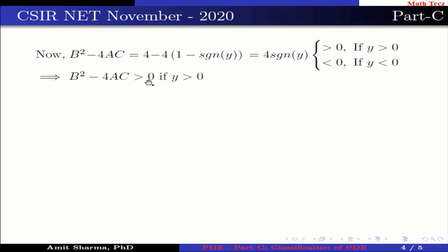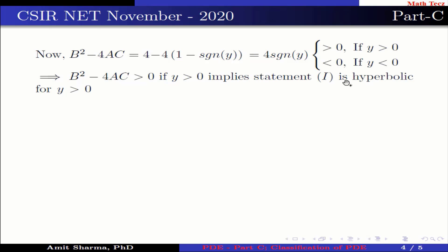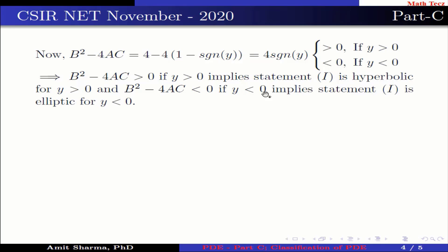This implies B² − 4AC > 0 when y > 0, so statement one is hyperbolic for y > 0, and elliptic for y < 0. Therefore, option B is correct.